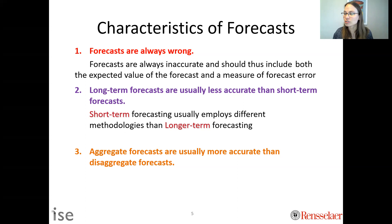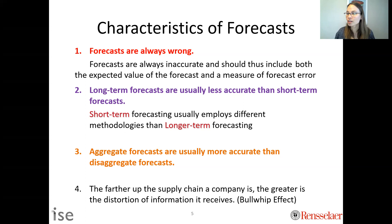The final characteristic is that the further up the supply chain you go — further from the customer — the less accurate your information tends to be. You have distorted information about what true customer demand looks like. This is known as the bullwhip effect, which we'll cover in the second module.